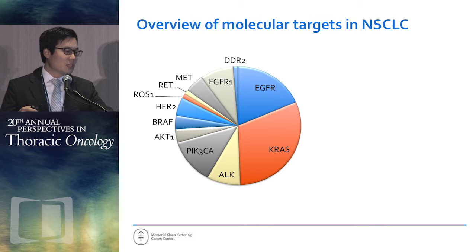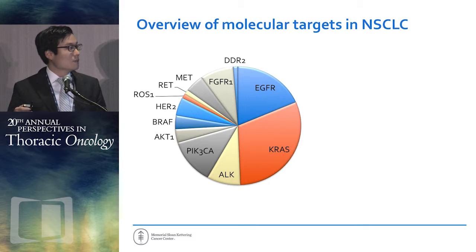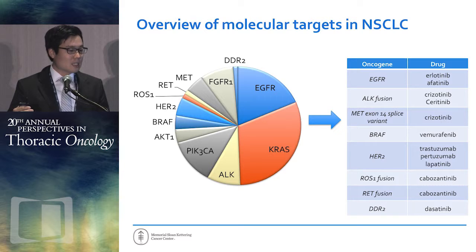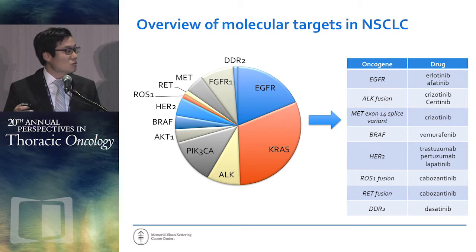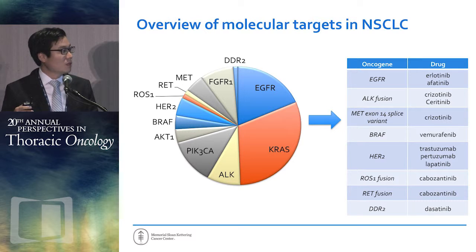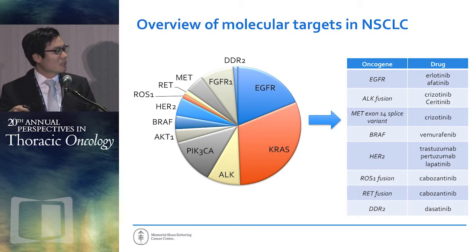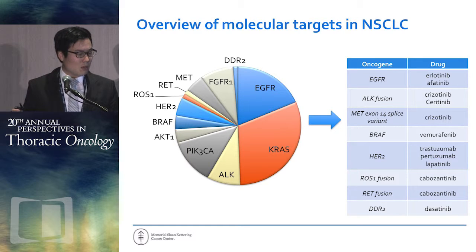Before we launch into a discussion about the data — and unfortunately, because a lot of this stuff is not as mature as EGFR and ALK, we're going to have to delve into some preclinical concepts — it's worth mentioning that a lot of these things have approved agents you can use off-label. For HER2 mutant lung cancer, one can consider any of the HER2-directed therapies approved for breast cancer. For BRAF mutant lung cancer, vemurafenib with or without trametinib. For MET exon 14 splice variants and amplified patients, crizotinib. And for other targets, a number of things approved in other malignancies can be considered for our patients off study.